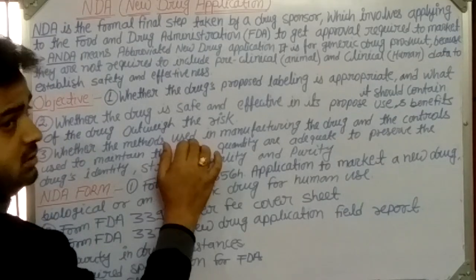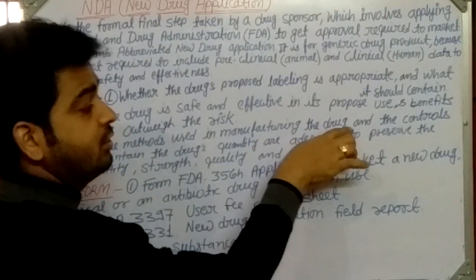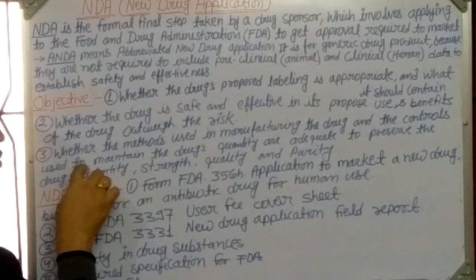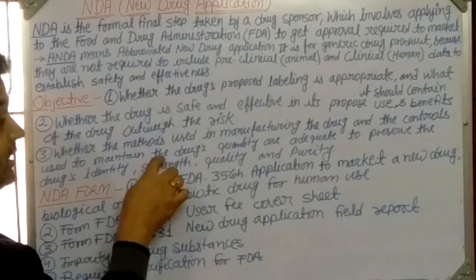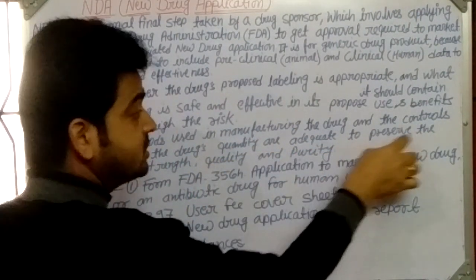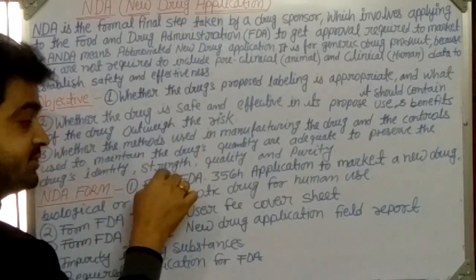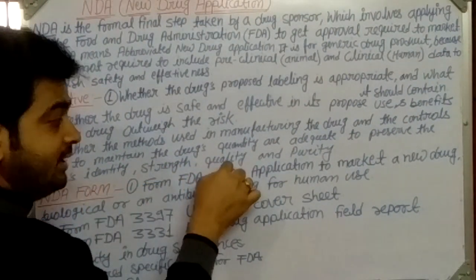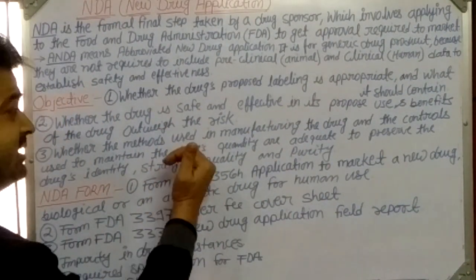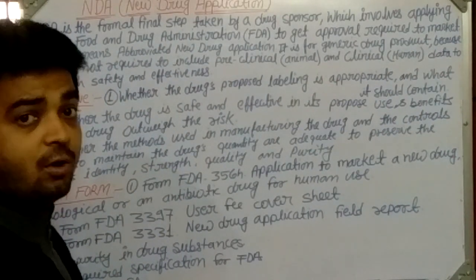The third objective of the NDA is to confirm whether the methods and processes used in manufacturing the new drug, and the controls used to maintain the drug's quality, are adequate to preserve the drug's identity, strength, quality, and purity. These three objectives must be confirmed through the NDA filing.